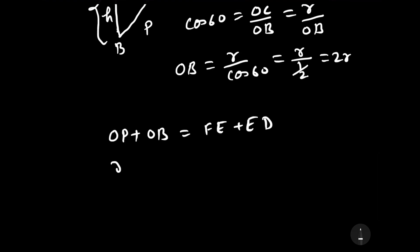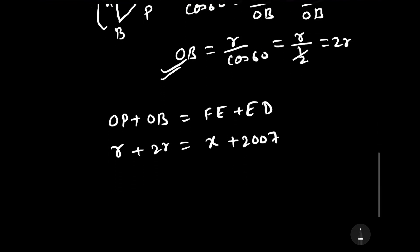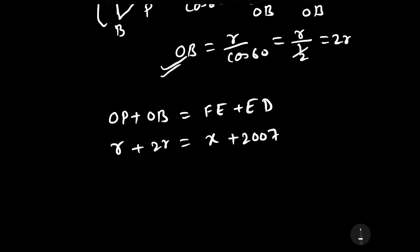The value of OP is R and the value of OB we have already found as 2R. The value of FE is x which we have to find and the value of ED is 2007 centimeters. From here we can see that this is equal to 3R and this is equal to x plus 2007 centimeters.